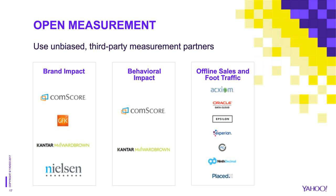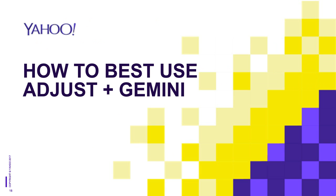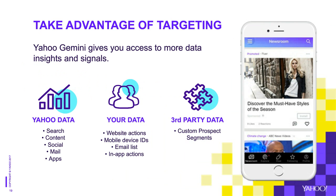Let's talk about how to best use Adjust with Gemini. Gemini has a wealth of proprietary data sources that powers our app marketing features. We have data across search, content, social, mail, and apps, and we use these signals to drive performance for your app install campaigns. Additionally, you can bring in your own data into the picture — with website actions, mobile device IDs across iOS and Android, email lists that we can match against our 1 billion global users, and those critical in-app events. You can also bring in third-party segments to further refine targeting.